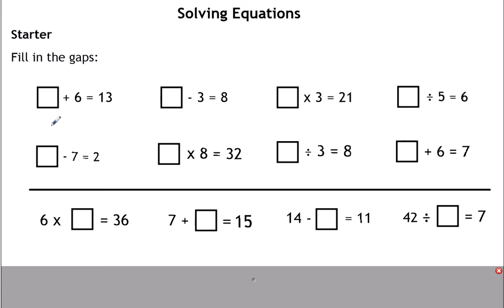For this first one, something add 6 is 13. Hopefully you figured out that the quickest way to do this was to turn the question around and do a taking away. 13 take away 6 is 7, so you should have 7 in the first one. Something take away 3 is 8 — the number is bigger than 8, it's 3 bigger, so 8 add 3 is 11. Working backwards: the question says take away 3 but to find the missing number you add 3. Something times 3 is 21 — how many 3s are in 21? 7. So 21 divided by 3 is 7.